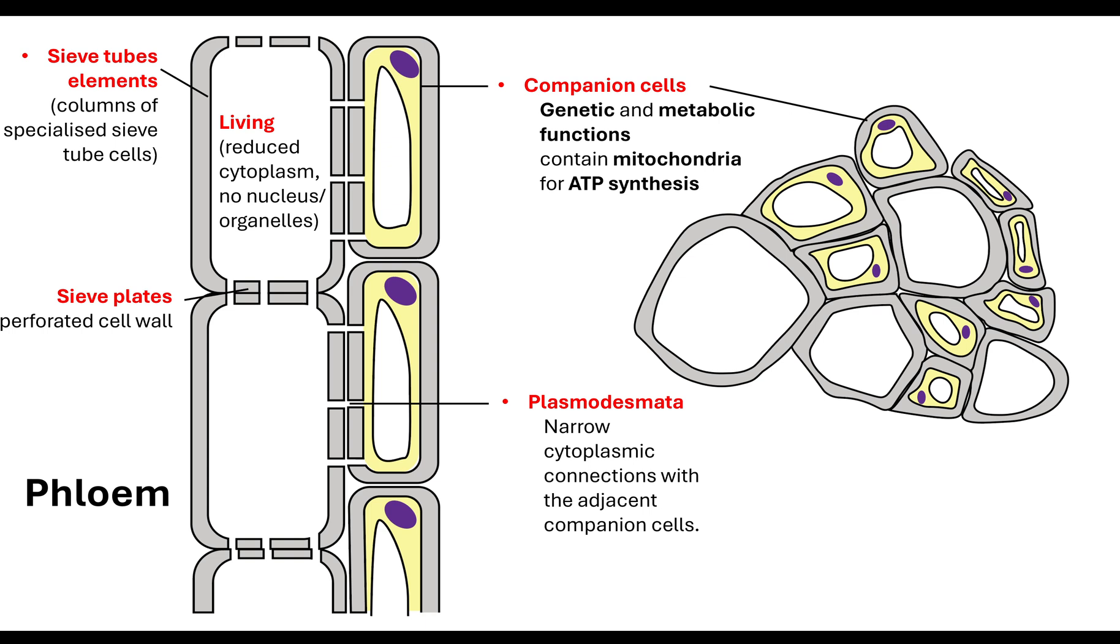So the phloem vessel is living whereas the xylem vessel is dead. The phloem vessel has got these sieve plates, these perforated cell walls whereas the xylem vessel has got these perforated end walls. It's important that you note the similarities but also the differences because that's what they'll be looking for in these exam questions. I would be writing it in a table or with connective sentences. The xylem vessel has the bordered pits whereas the phloem vessel does not. The phloem vessel is living whereas the xylem vessel is made of dead cells.